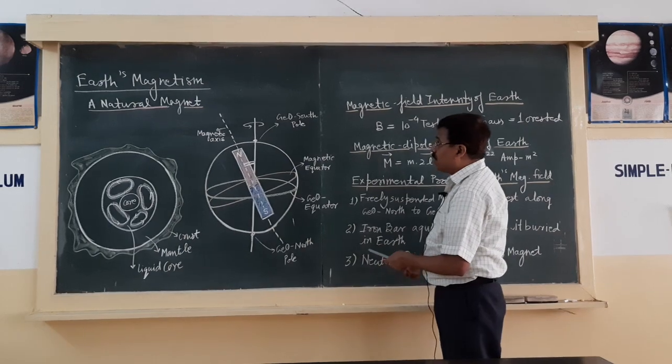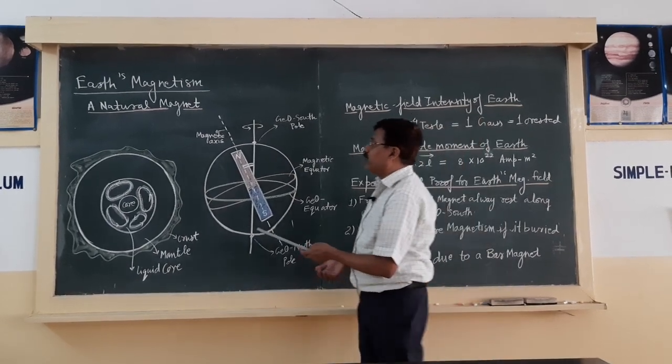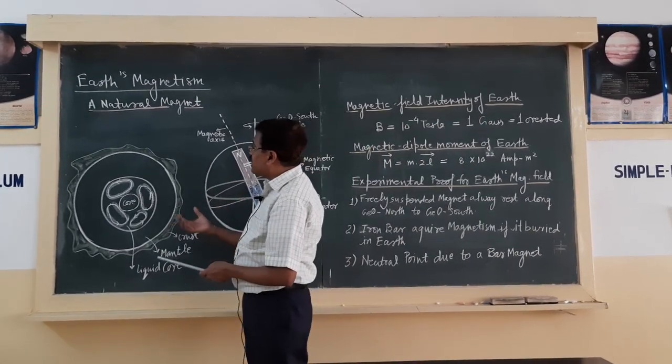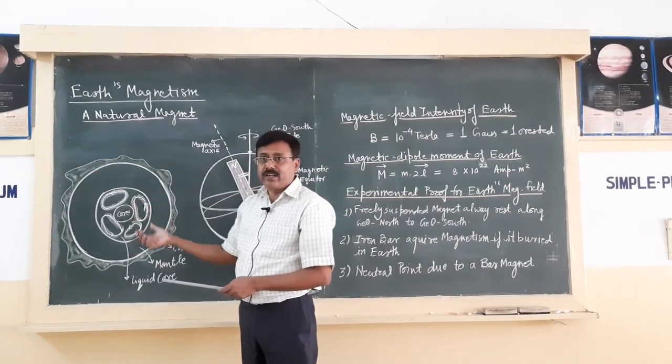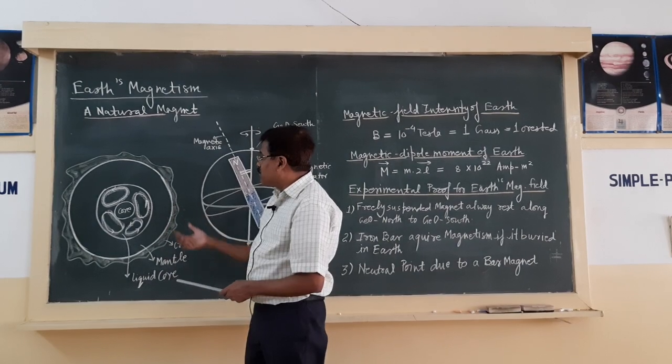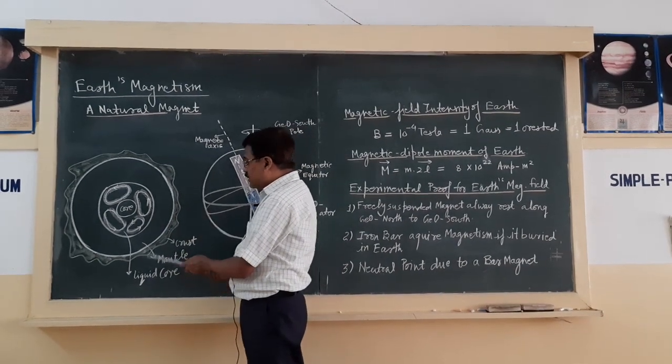What is the reason, what is the cause? There are so many theories. One scientist suggested that inside the earth there is a huge size of magnet, but that is practically not possible. So the option is the convection current.